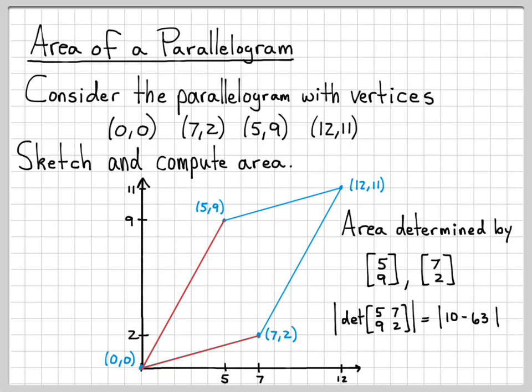The determinant is 10 minus 63. This is the absolute value of the determinant, mind you. The absolute value of 10 minus 63 is the absolute value of negative 53, which is 53 square units. So this is the area of this parallelogram.